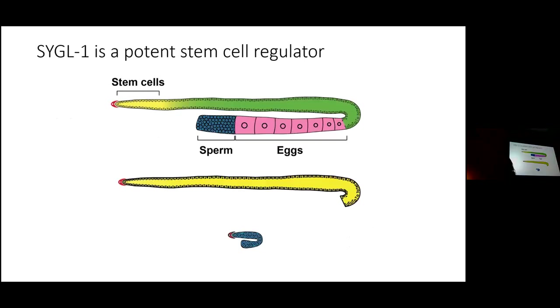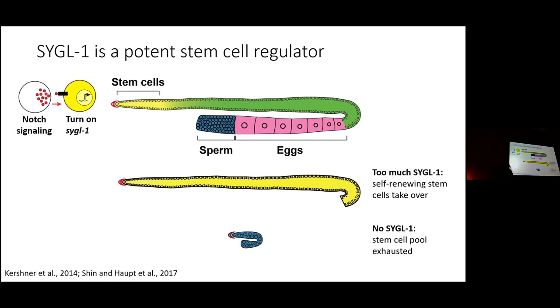So back to this diagram illustrating the consequences of too much or too little stem cell self-renewal. Now we know that notch signaling from the niche is important for keeping this balance. Notch is the call. Our lab and others have seen that too much notch gives us this result and no notch gives us this result. The response is turning on the Sigil-1 gene. And turning on Sigil-1 too much gives us this result. Having no Sigil-1 at all gives us this result. So Sigil-1 is a potent stem cell regulator. Mystery solved, right? But if Sigil-1 is the response to notch signaling, how is the response controlled so that Sigil-1 is at the right abundance?